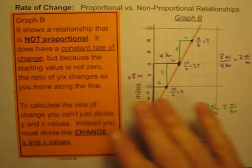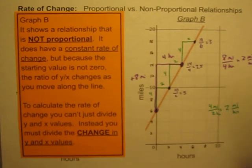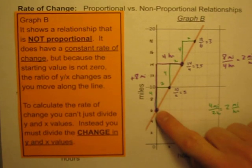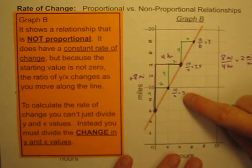So I'm getting the same result. So on graph B, this one is a nonproportional relationship. It does have a constant rate of change. But because the starting value is not zero, the ratio of y divided by x changes as you move along the line.